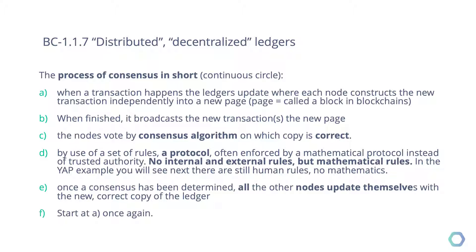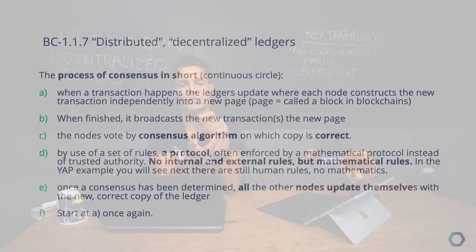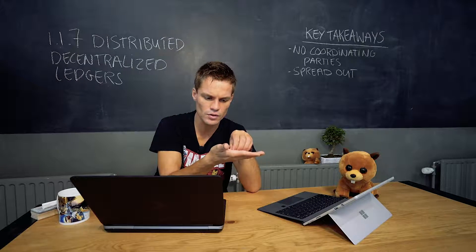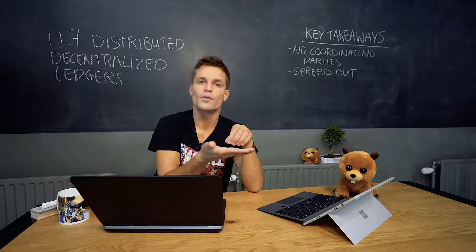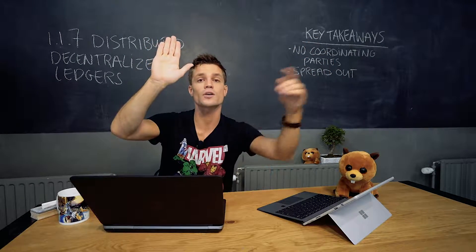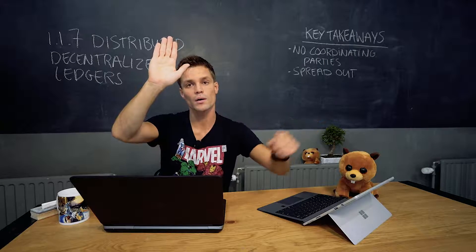When a transaction happens, the ledger updates where each node constructs the new transaction independently on a new page. What this means is: when you finish one page, you create a new page and start recording new transactions. Everybody simultaneously turns to the new page and starts recording. As soon as one of the nodes has their page finished, they present it to all the other nodes, saying: node on the other side of the world, I am finished. You can stop your work, I've done it already.